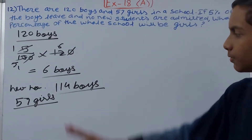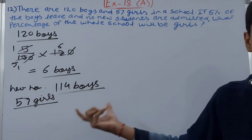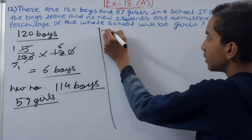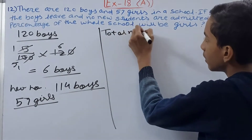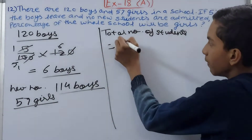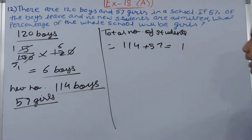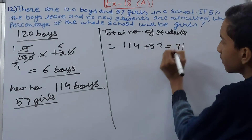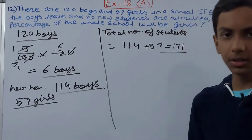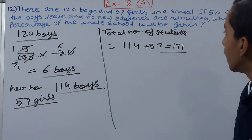Now we have to find the percentage of girls out of 114 boys and 57 girls. First we find the total number of students: 114 plus 57 equals 171. So there are 171 students after 5 percent of boys have left and no new students are admitted.